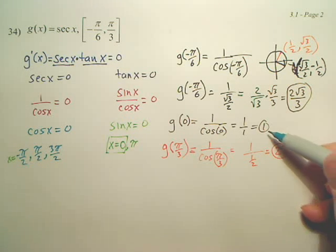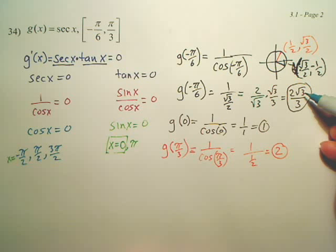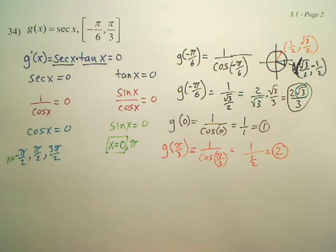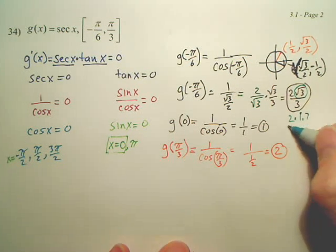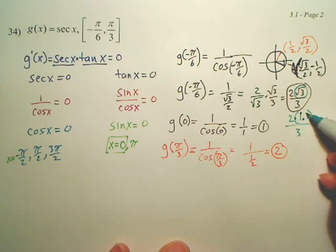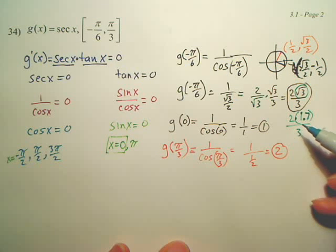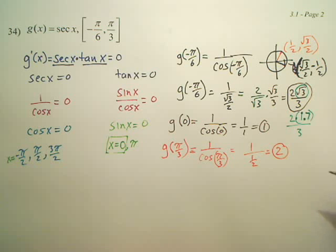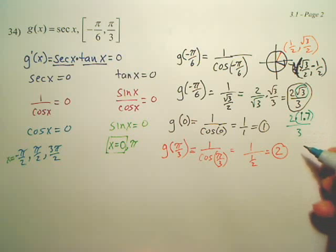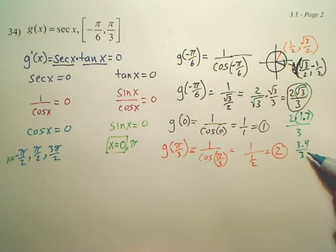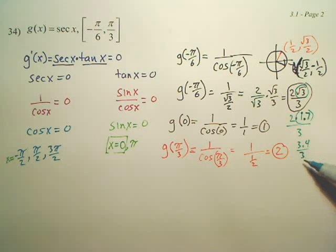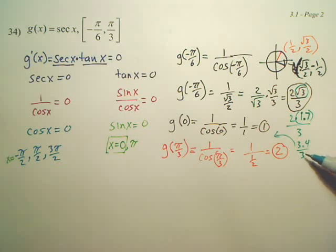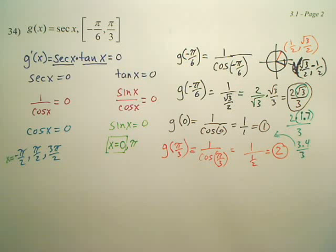So we have these three values. Looking at them: two square root three over three is the middle value — let's approximate. Square root of three is closer to two than to one, so two times 1.7 gives about 3.4 over three, which is bigger than one but smaller than two. So this value is between the other two, and we can ignore it for the extrema. So our absolute minimum is one at x equals zero, and our absolute maximum is two at x equals pi over three.